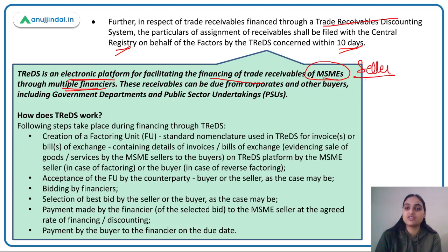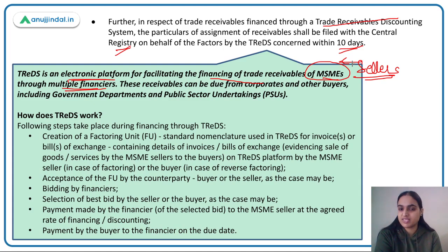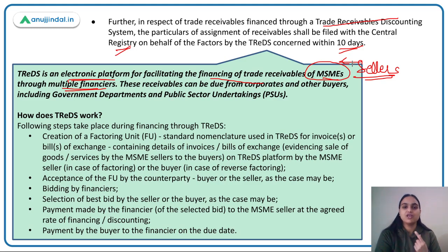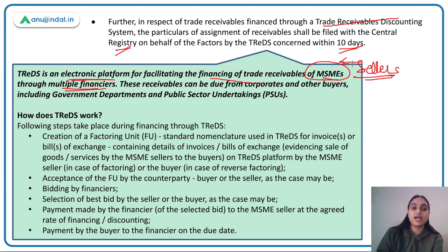TREDS is an electronic platform which facilitates financing of trade receivables of MSMEs through multiple financers. Where sellers are MSMEs who have sold goods on credit, they can sell off their receivables and get them financed from various financers available on TREDS. As a MSME seller, you can get amounts due from any corporate buyer, government department, or public sector undertaking financed from multiple financers on this platform.